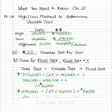When you multiply this out, $240,000 equals $230,000 plus $10,000. That does check out. So $10,000 is the amount of fixed cost.